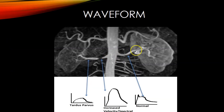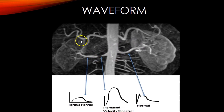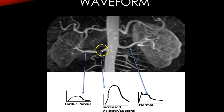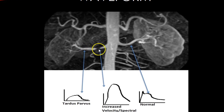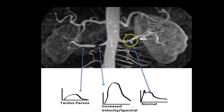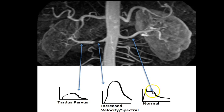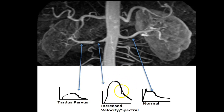On CT angio, a stenotic right renal artery shows a kidney much smaller than the left — the right renal artery appears to stop, indicating a very tight stenosis. Doppler proximal to the stenosis shows a normal waveform with sharp fast acceleration time and good diastolic flow. At the stenosis itself, you'll see very high velocities. Post-stenotically at the hilum, you'll find a tardus parvus waveform.